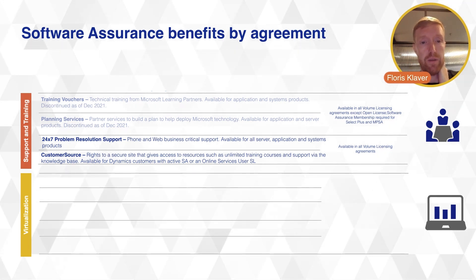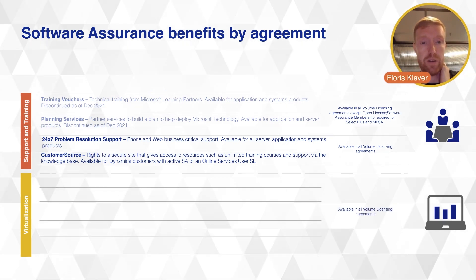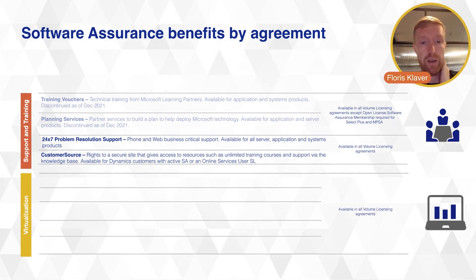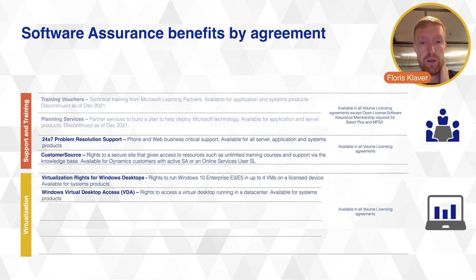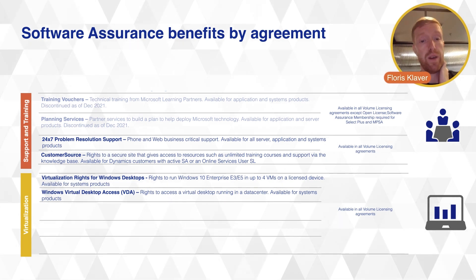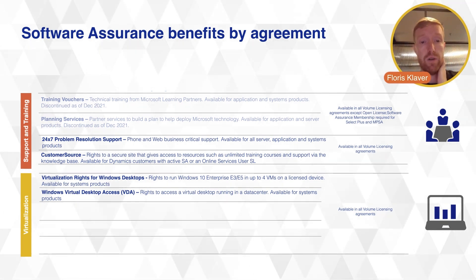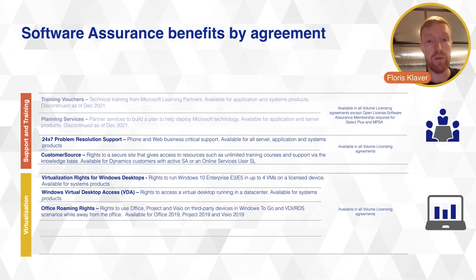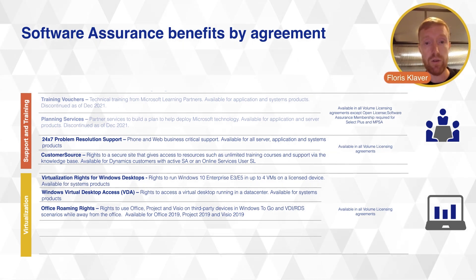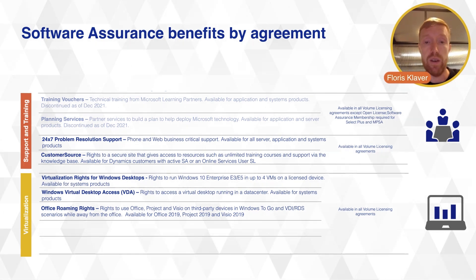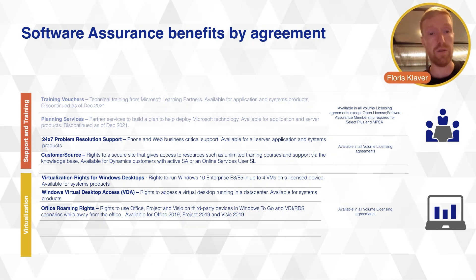On the virtualization front, there are options you can leverage, such as the virtualization right for Windows Desktop and the Windows Virtual Desktop Access right — available when you have the Windows operating system with Software Assurance. If you have Office with Software Assurance, you get Office Roaming Use Rights: the right to use Office, Project, or Visio on third-party devices away from the office, which is the way to license for people working from home.